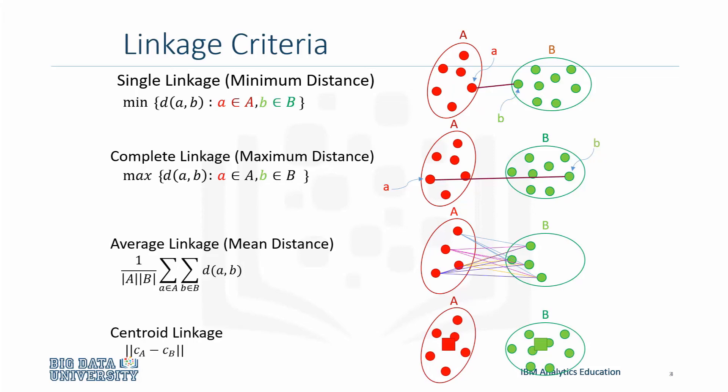The final linkage to be reviewed is centroid linkage clustering. This takes into account the centroid of each cluster when determining the minimum distance. In the equations shown,